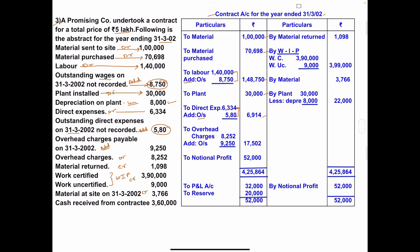Overhead charges payable on 31st March 2002 is the outstanding amount. Overhead charges is ₹8,252. Write in the solution: ₹8,252. Add outstanding amount ₹9,250. Total of these two: 8,252 plus 9,250 gives ₹17,502.